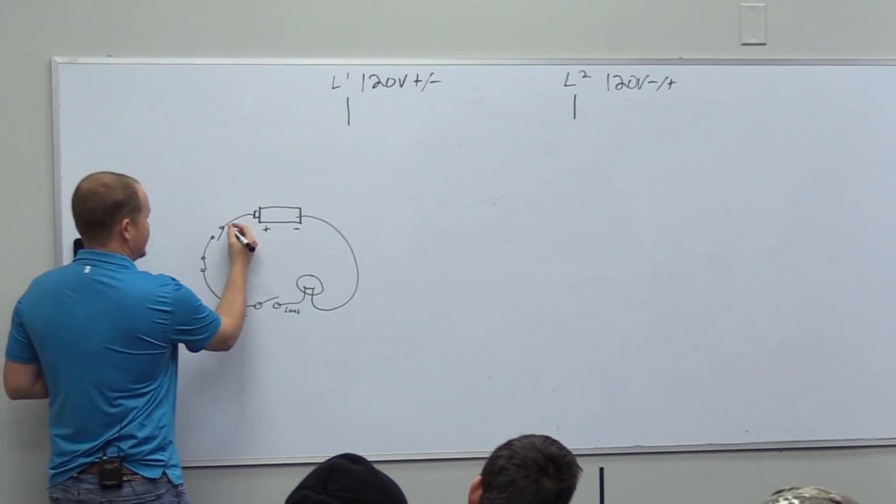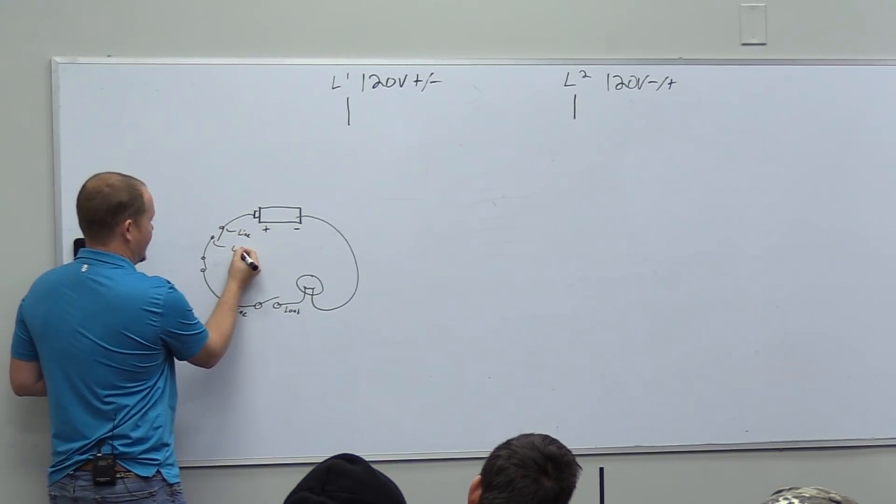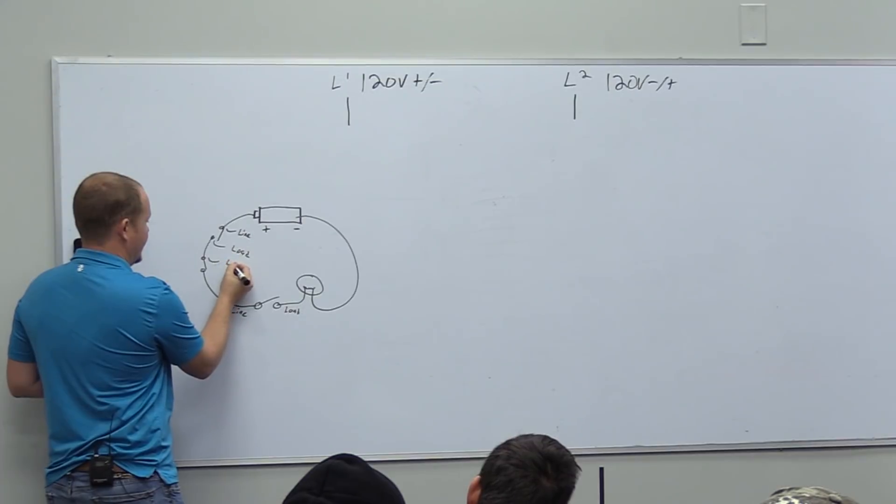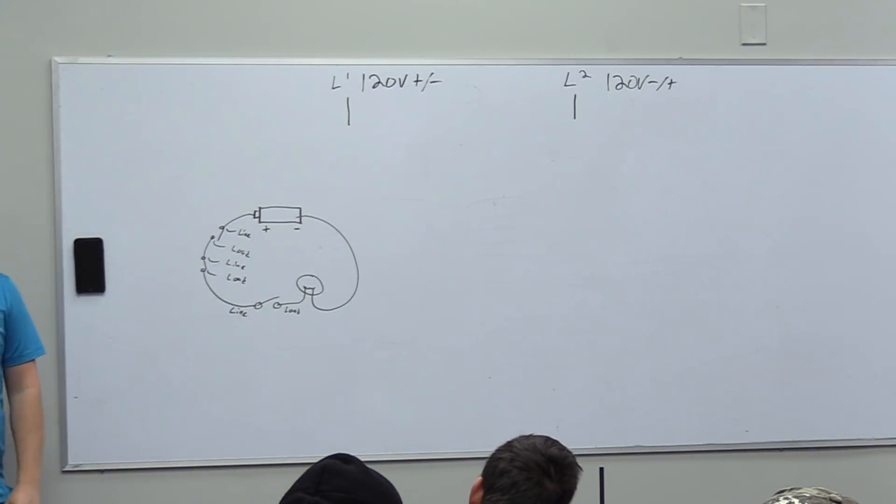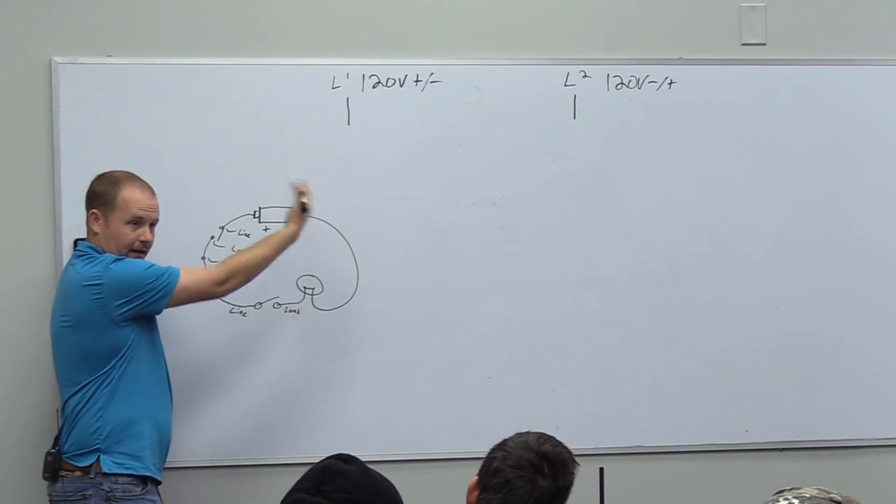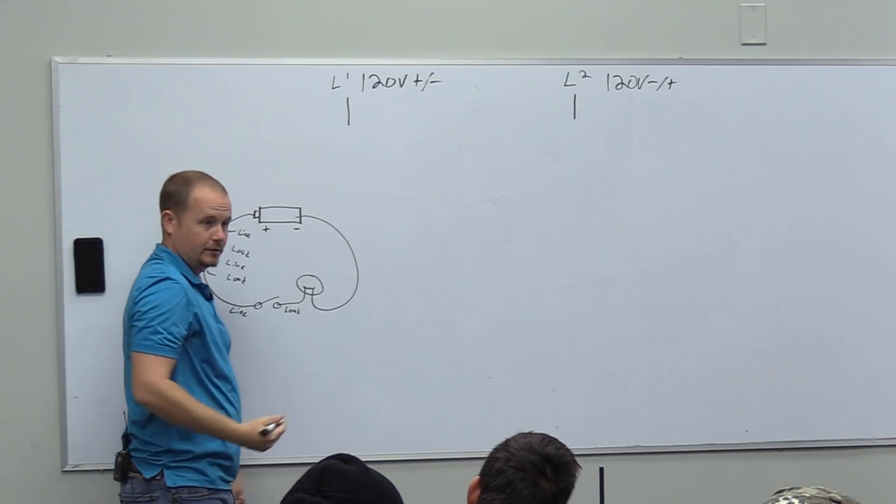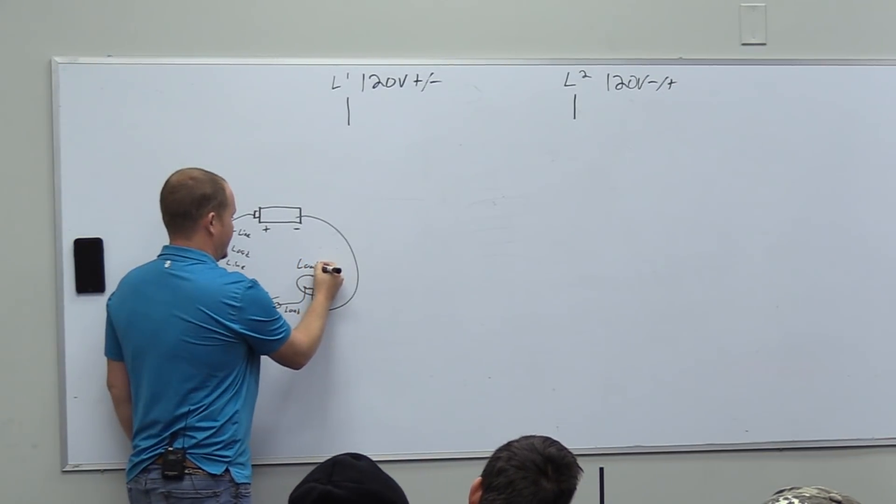But how do we use line and load when we have multiple switches? We would say this is the line side of this switch and this is the load side of this switch. This is the line side of this switch, this is the load side of this switch. The side of the switch that's nearer line is the line side of the switch. The side of the switch that's nearer the load is the load side of the switch. In this case, the light is the load.